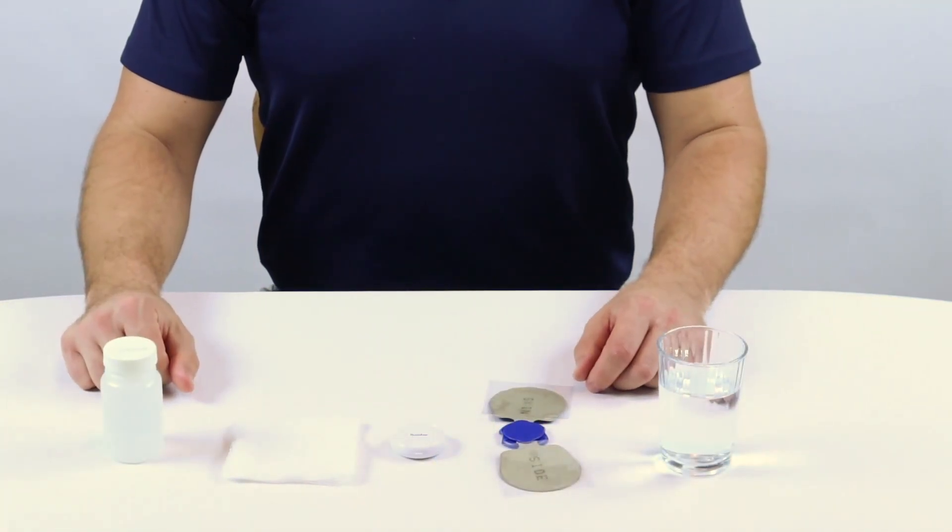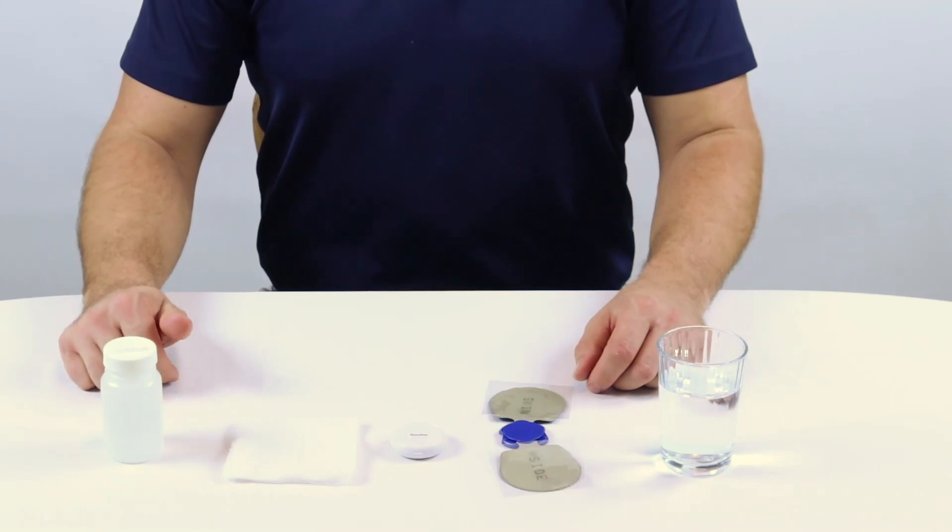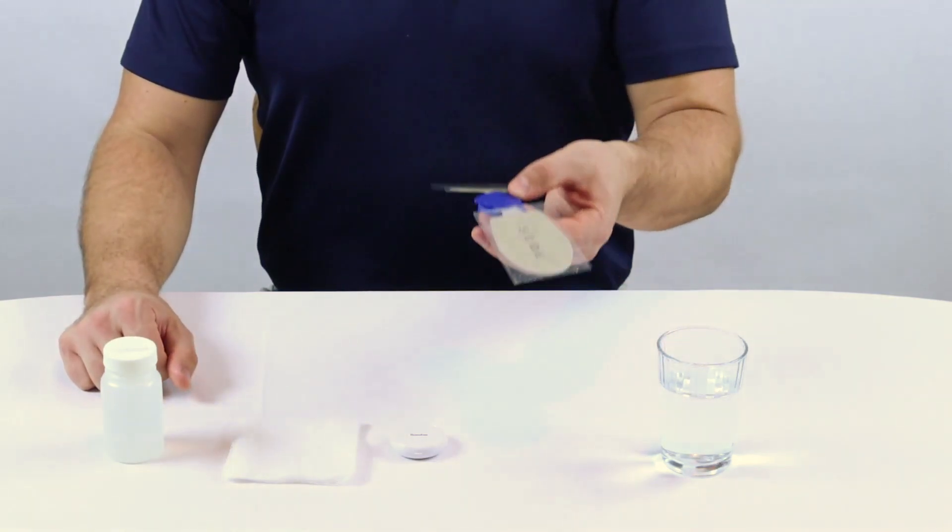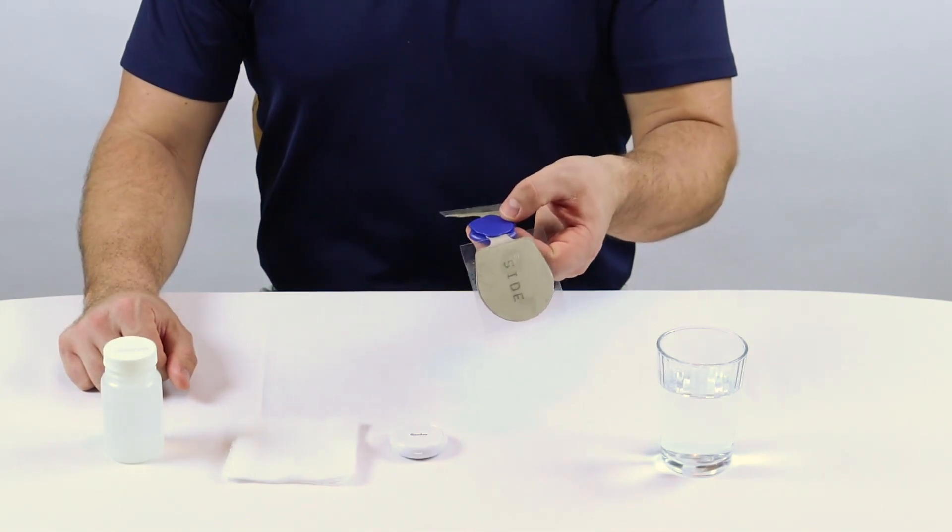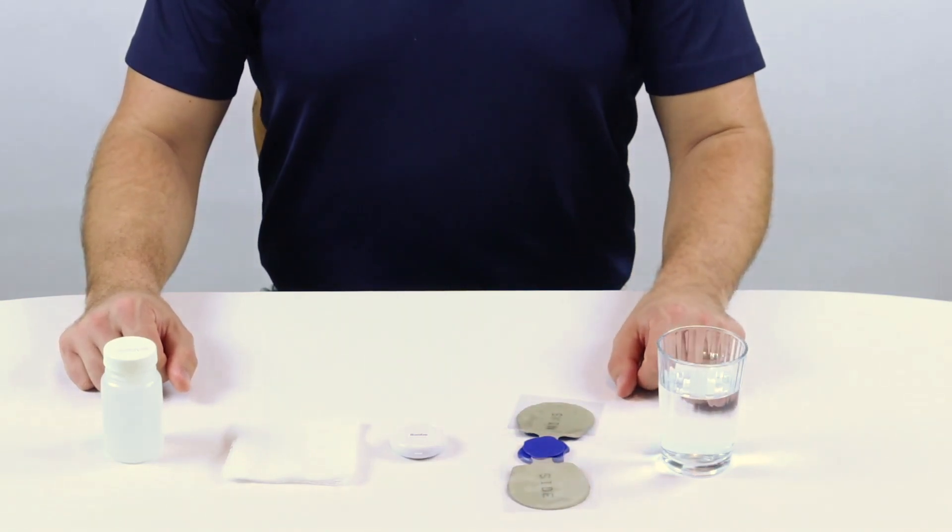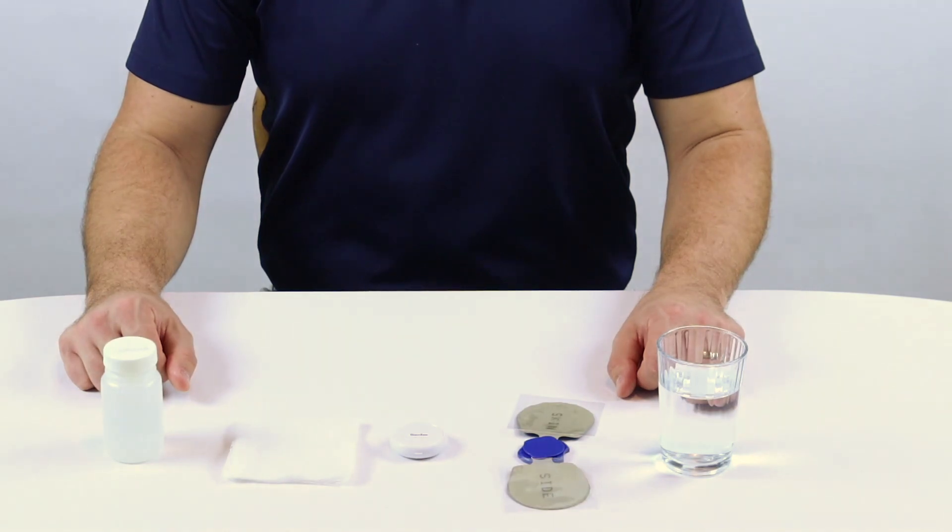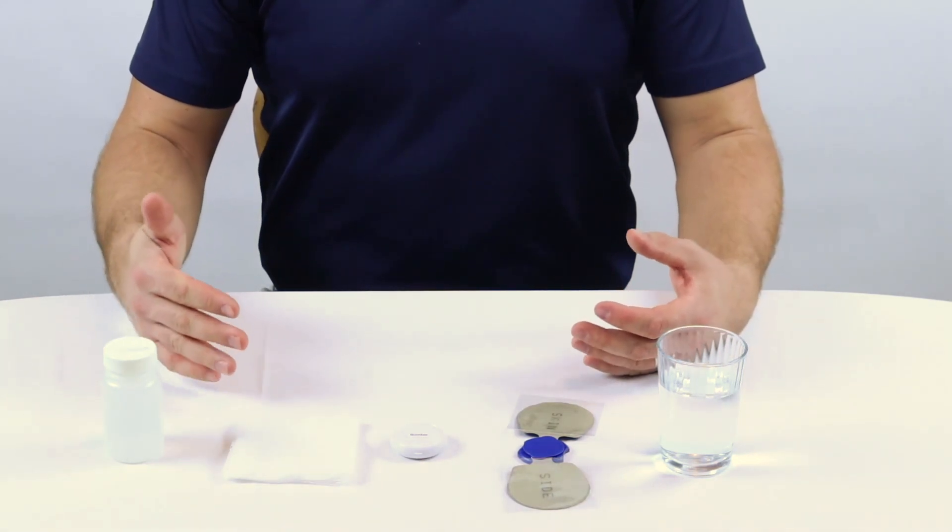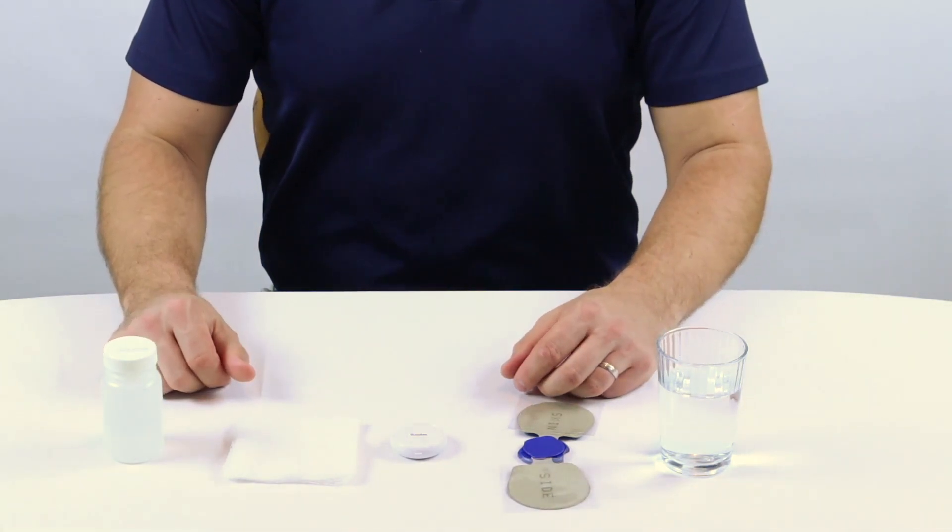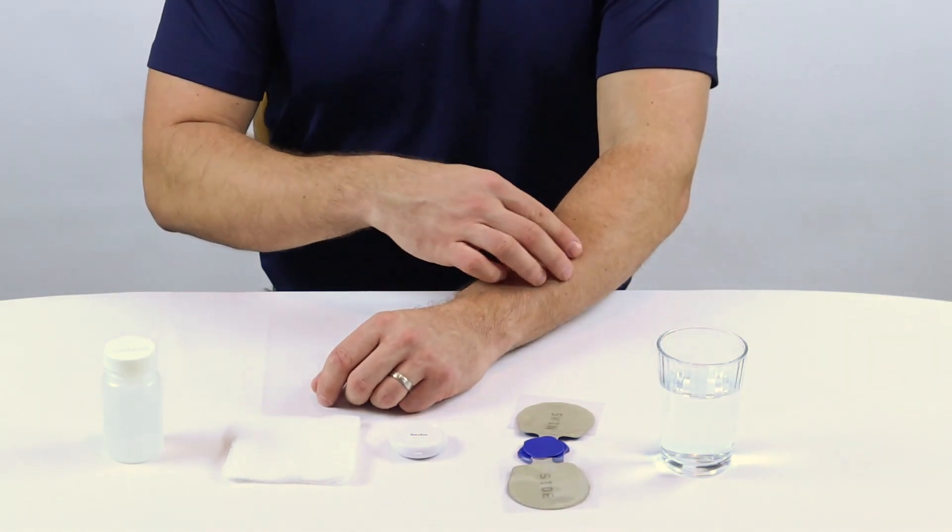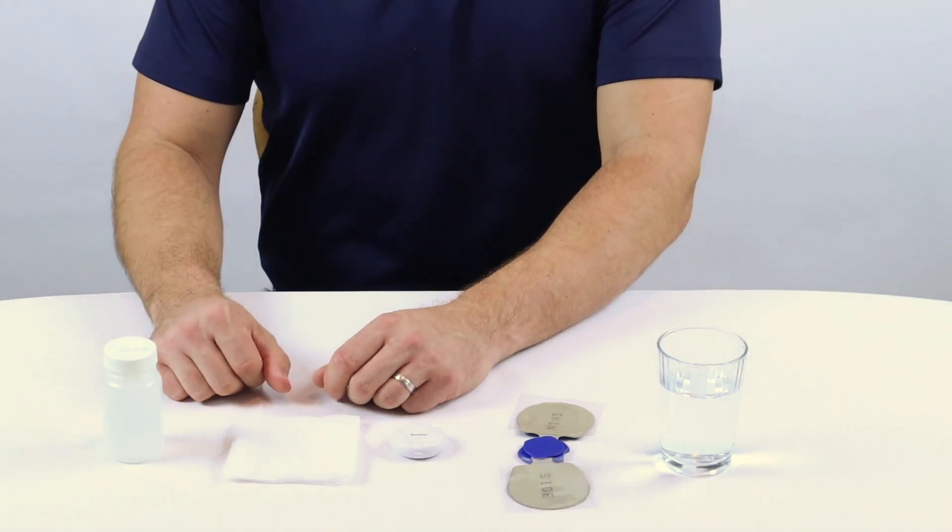Another commonly asked question about the Sabostim Go is, how do I extend the life of my gel pads? Most people can get 10 to 12 uses out of their gel pads, but you need to follow these important steps. Like typical electrical stimulation pads, the gel pads of the Sabostim Go will not work properly if there is lotion, cream, sweat, hair, or dead skin underneath the gel pad. If you have long or thick hair in the area you intend to use the Sabostim Go, then you may need to trim that hair for best use.